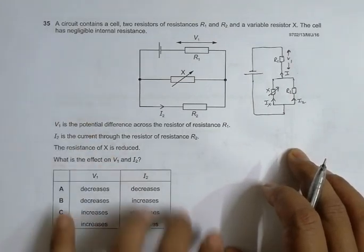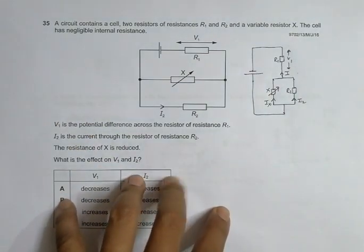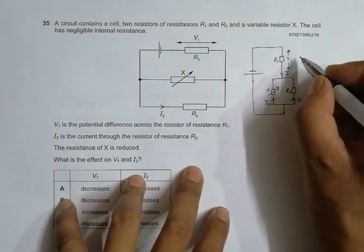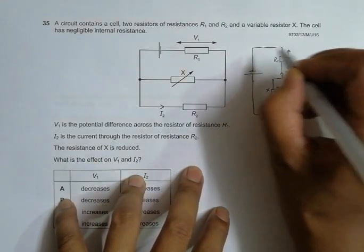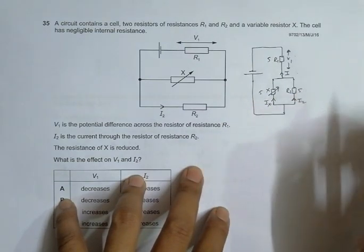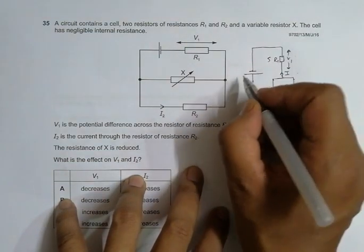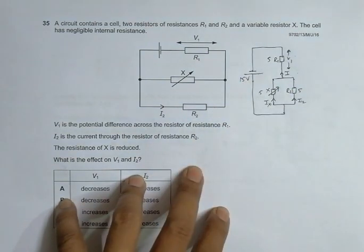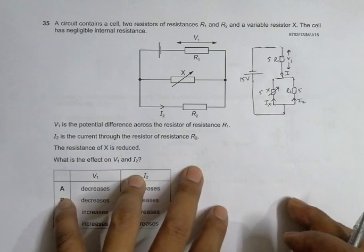We are just making things easy. So in order to analyze these things specifically, let us give some values here. So let us say we have R1 equal to 5 ohm, this is 5 ohm, this is also 5 ohm, and let us say the cell is equal to 15 volts. So I am just giving some arbitrary values here.